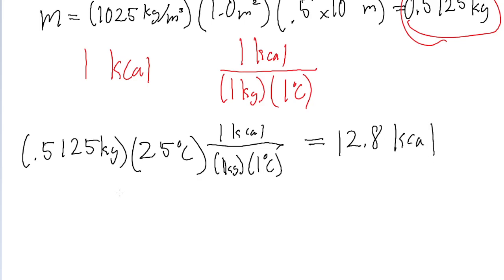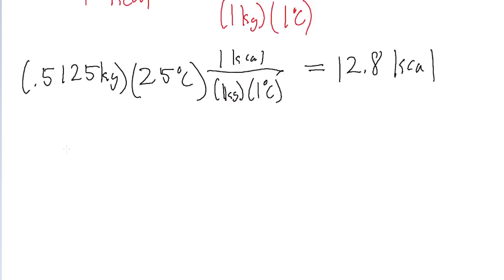So this is the amount of energy required to heat the water up this much. But the problem asks us not to answer in kilocalories, but instead to answer in this weird unit of candy bars, which the problem tells us is equal to 300 kilocalories. So one candy bar is equal to 300 kilocalories.